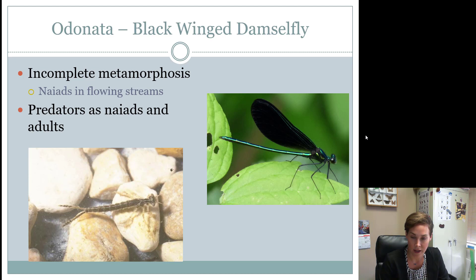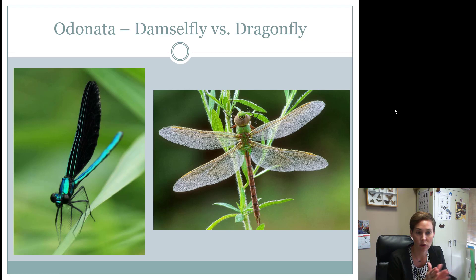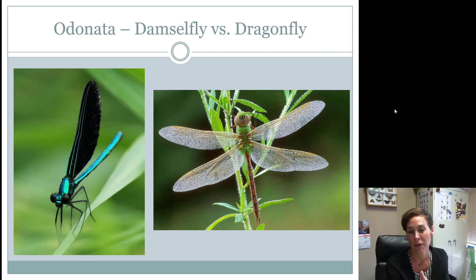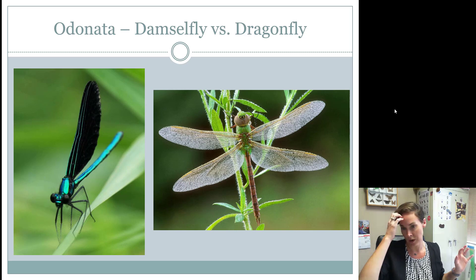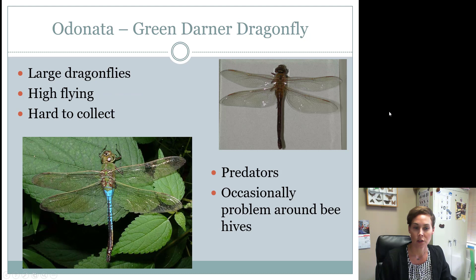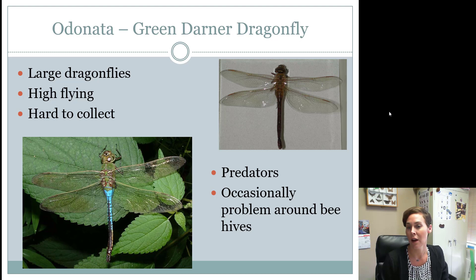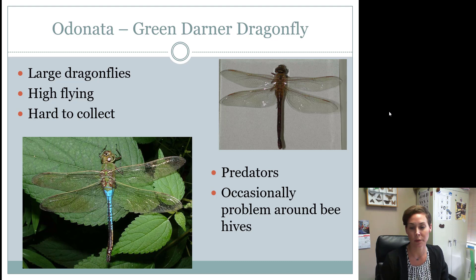All Odonata have incomplete metamorphosis; immatures are called naiads. Both adults and naiads have chewing mouthparts and are predatory. Dragonflies hold their wings spread out — this is more primitive and less advantageous since predators can grab the wing tip easily. Damselflies evolved to fold wings over the back, appearing smaller. The only dragonfly you need to know is the green darner dragonfly. Dragonflies can occasionally be a pest around beehives, where groups will eat bees as they fly out of the hive.